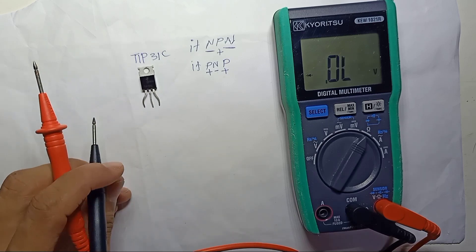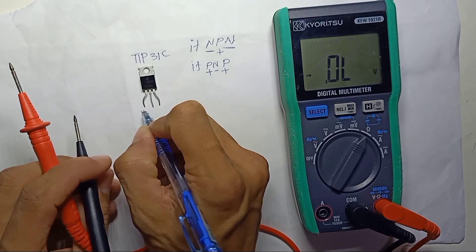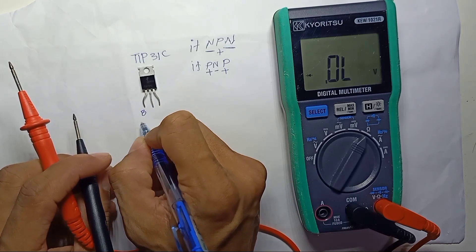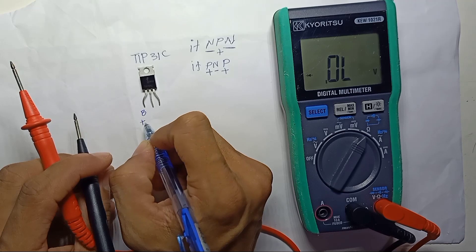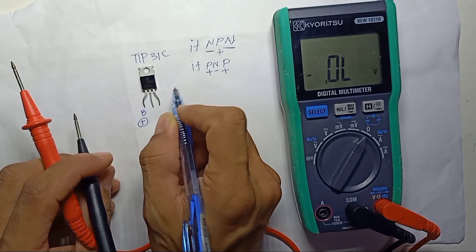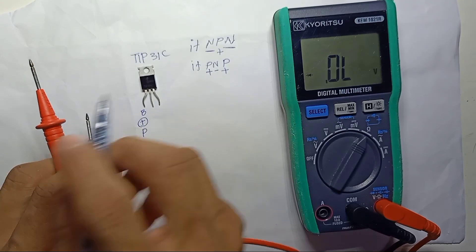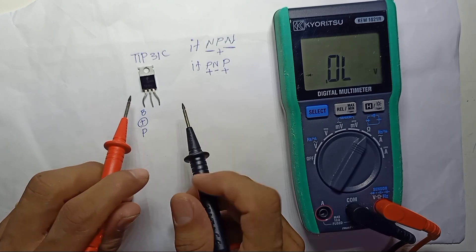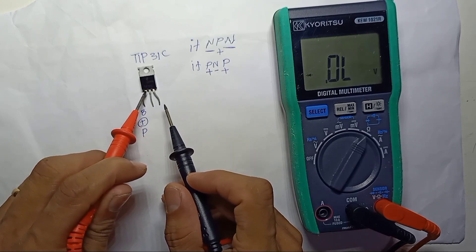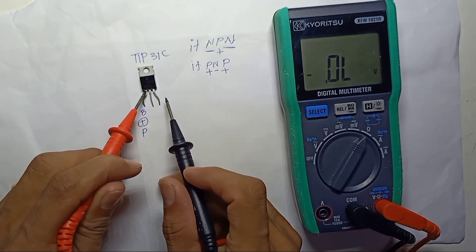So here is base. Base pin is positive. So we want to identify which one is collector, which one is emitter.